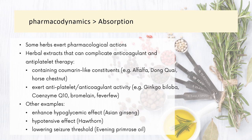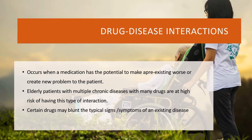In terms of pharmacodynamic interactions, some herbs might exert pharmacological actions. For example, alfalfa, dong quai, or horse chestnut contain coumarin-like constituents, so they will exert anti-platelet or anticoagulant activity. Other examples include Asian ginseng, which has hypoglycemic effects, hawthorn having hypotensive effects, and evening primrose oil, which might lower the seizure threshold.